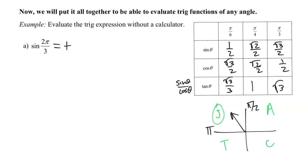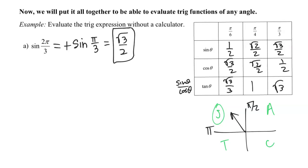The next thing I need to know is what the reference angle of two pi over three is. Because it's a radian, that's going to be super easy — this is just going to become sine of pi over three. And the last thing I need to know is what sine of pi over three is from the table. Sine of pi over three is square root of three over two. And so the answer to sine of two pi over three is positive square root of three over two.